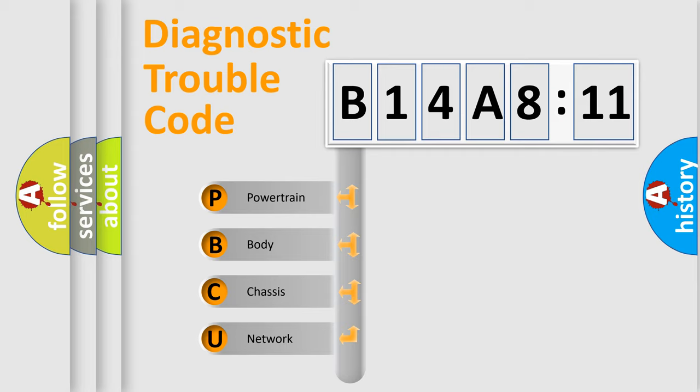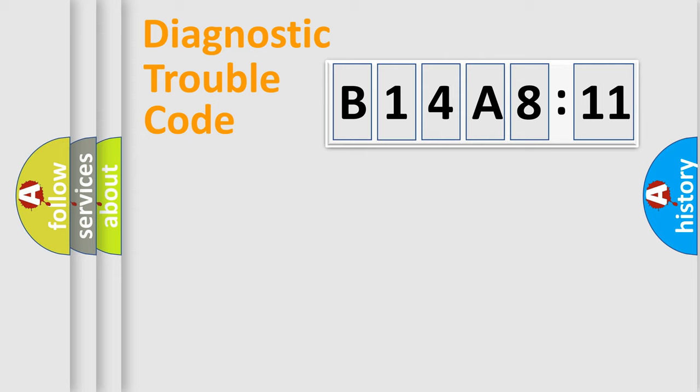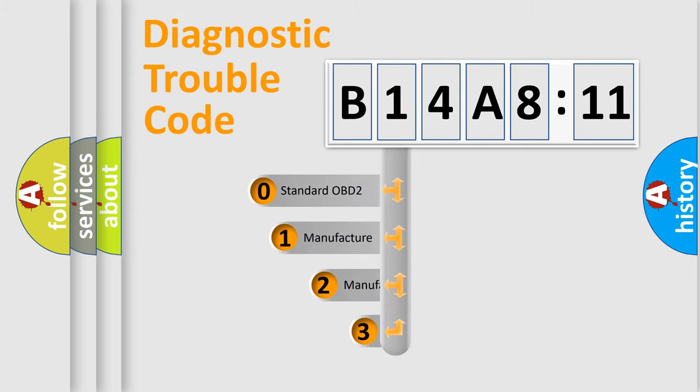We divide the electric system of automobile into four basic units: Powertrain, Body, Chassis, and Network. This distribution is defined in the first character code.